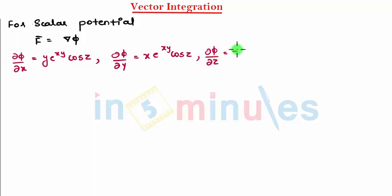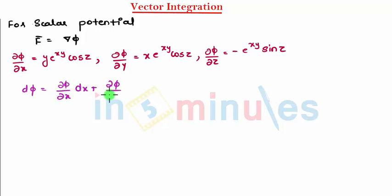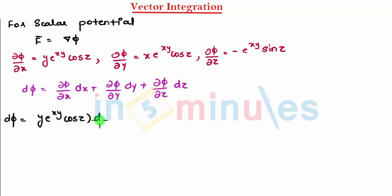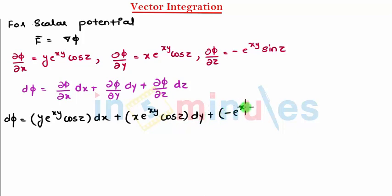And ∂φ/∂z = -e^(xy)·sin(z). Now after doing this, we have the formula: dφ = (∂φ/∂x)dx + (∂φ/∂y)dy + (∂φ/∂z)dz. Substituting here, dφ = y·e^(xy)·cos(z)·dx + x·e^(xy)·cos(z)·dy + (-e^(xy)·sin(z))·dz.